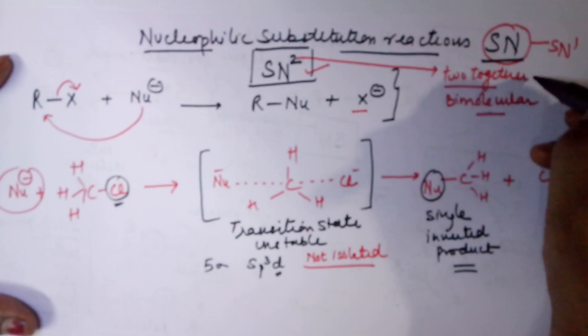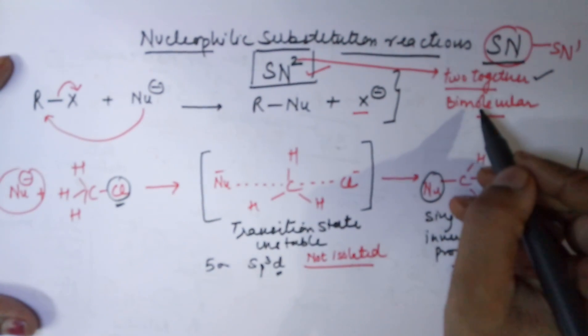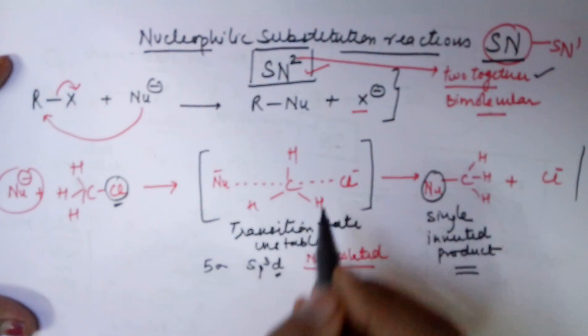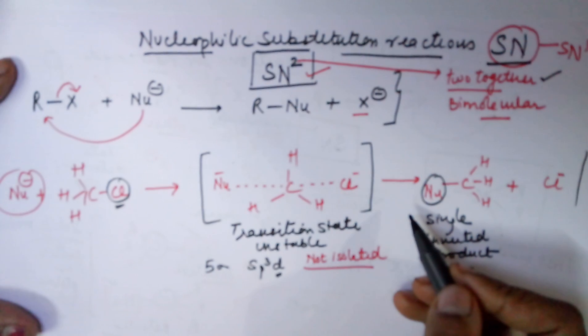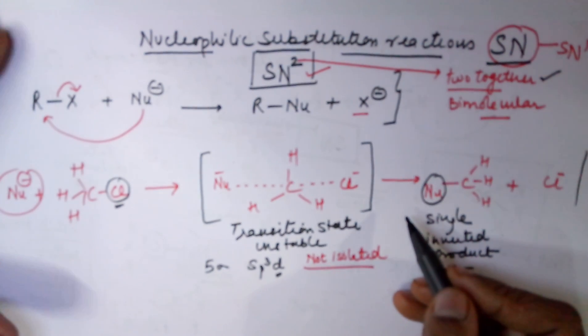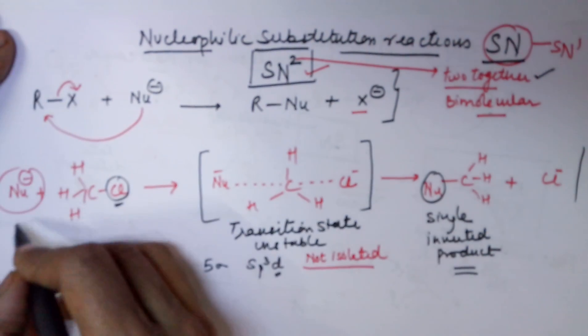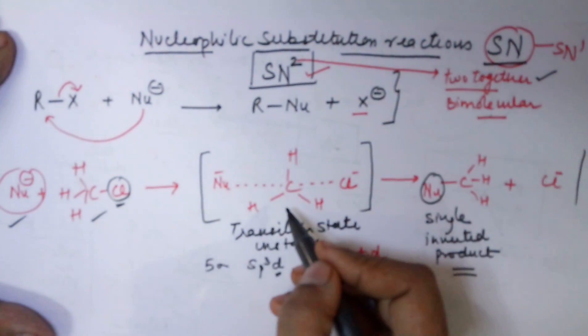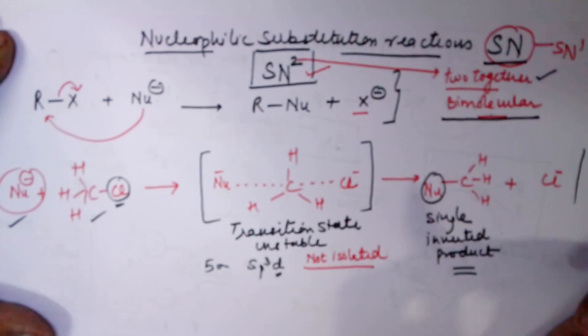So, SN2 mechanism, the two steps happen together. It is called as a bimolecular reaction. What does that mean? The speed of the reaction is dependent on this one step alone. There are no two steps. It is just a single step. So, the rate of the reaction is dependent on the single step and which is dependent on your two reactants. So, it depends on two reactants. That is why it is called as a bimolecular reaction.